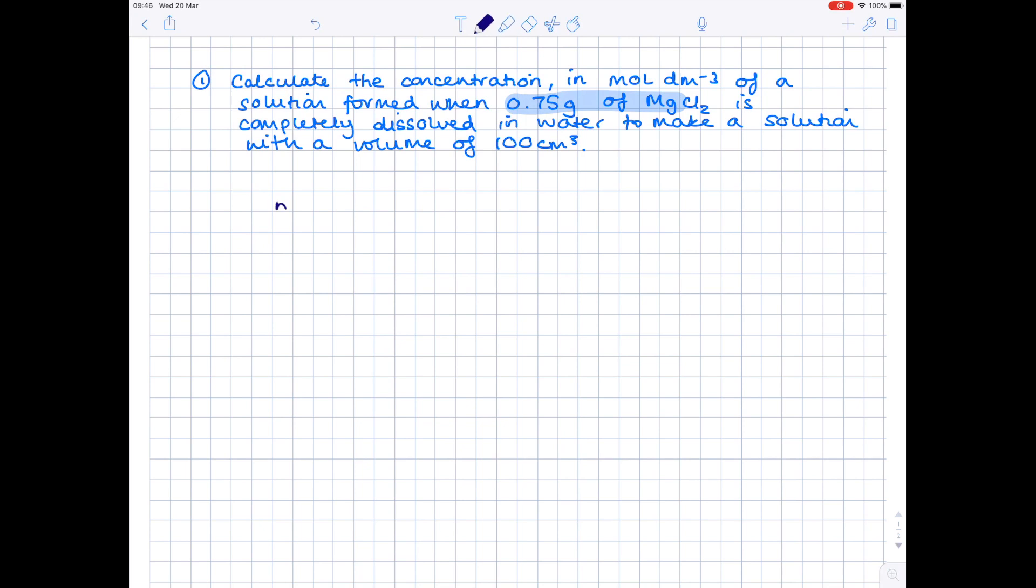So the first thing we need to do is use this information here to calculate the number of moles of magnesium chloride. And hopefully you're super familiar with this formula triangle, which states that mass equals number of moles times Mr. So in order to do this, we need to cover our n. So we're looking for the number of moles and we can see that we need to do mass divided by Mr.